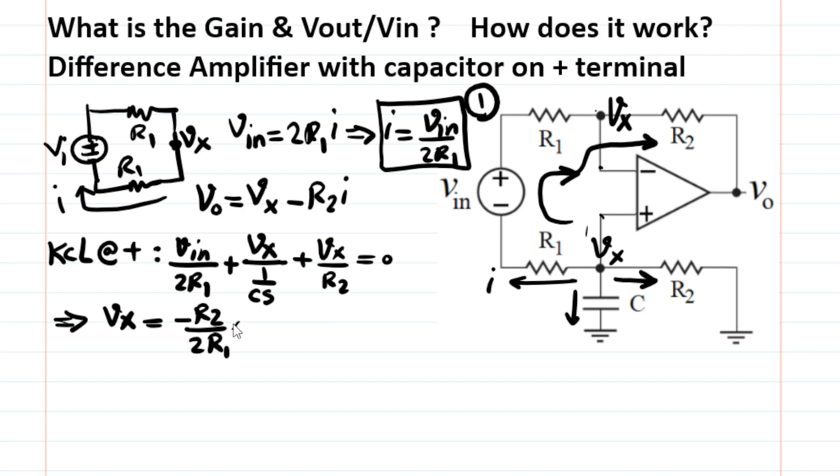you end up with Vx being equal to negative R2 over 2R1 times, let's say, times 1 over 1 plus R2 Cs times Vin. Okay, this is an important outcome, and I'm going to name it as equation number 2.